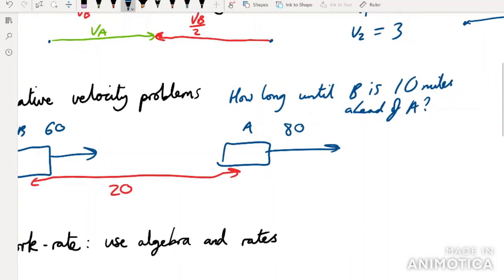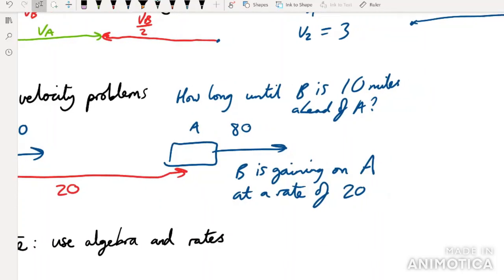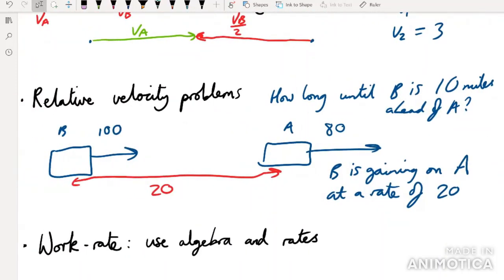All you need to do in relative velocity problems is realize that we don't care about the overall distance that they're actually traveling. All we care about is the relative velocity. So in other words, let's actually say this is 100 because otherwise this isn't going to work. B is gaining on A at a rate of 20 because 100 minus 80 is 20. And so then how long until B is 10 miles ahead of A? Well, he needs to travel 30 miles further than A. So in other words, all we need to do is say 30 over 20, and that equals 1.5 hours. So in relative velocity problems, and we'll do more of these, all we need to do is consider the difference in speeds and stuff like that.